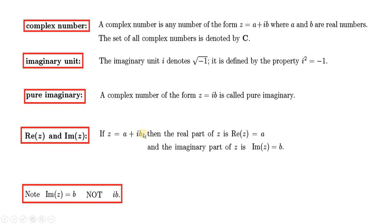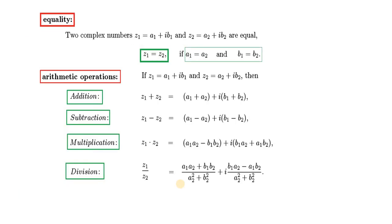Im(z) = b — اس کے ساتھ ہم iota نہیں لکھیں گے۔ یہ complex number کے بارے میں مختصر وضاحت تھی، اب ہم next slide میں جاتے ہیں۔